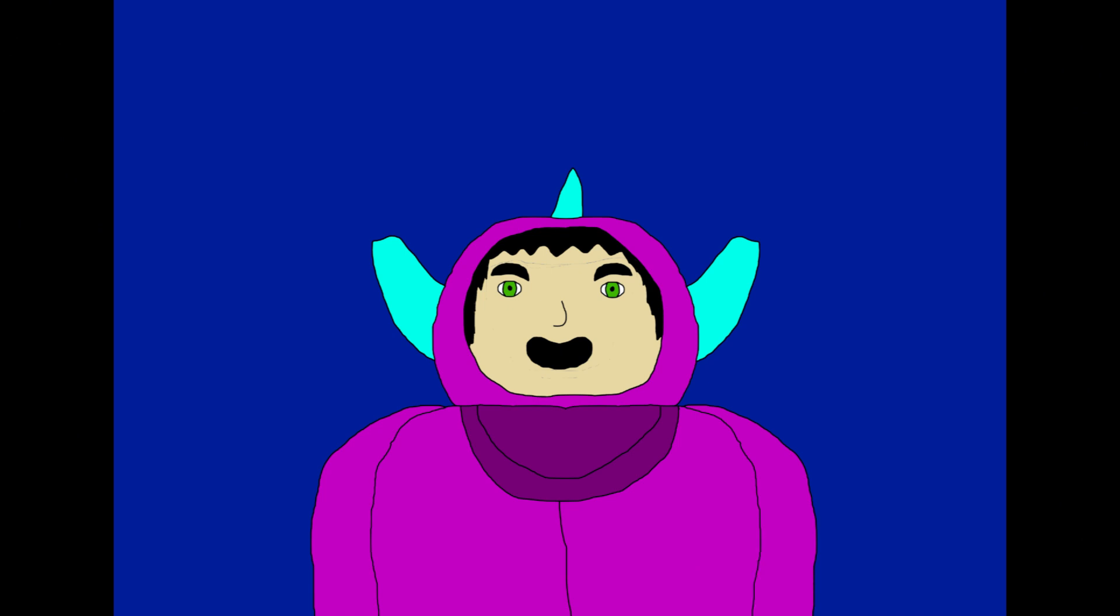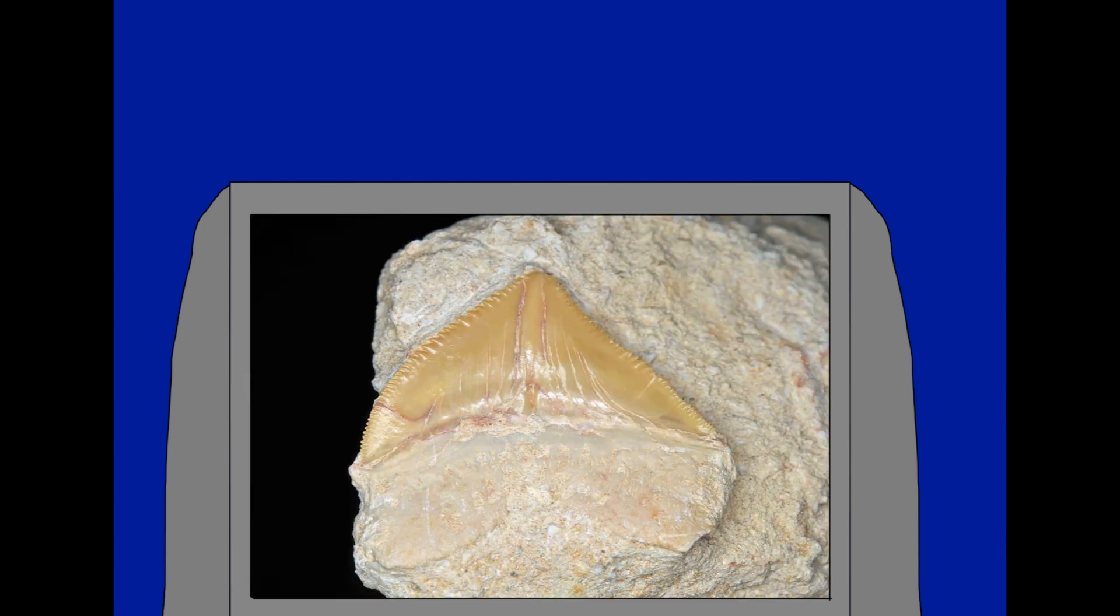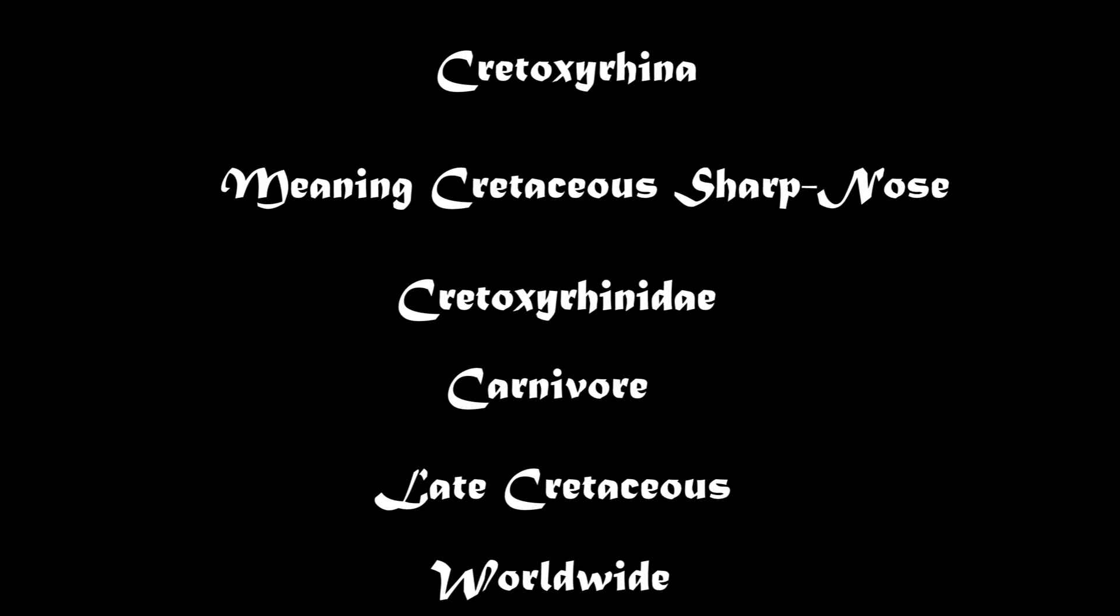Today we're talking about a tale of two sharks from the Cretaceous: Cretoxyrhina and Squalochorix. Cretoxyrhina means Cretaceous Sharpnose and it was part of the Cretoxyrhina family. It was a carnivore that lived during the Late Cretaceous in oceans around the world.